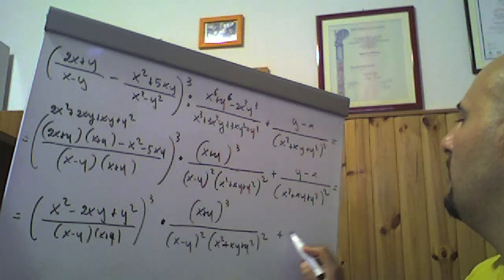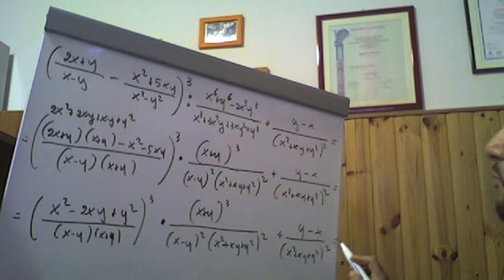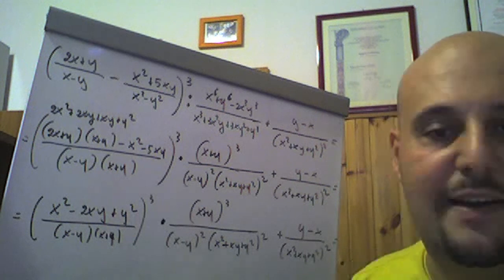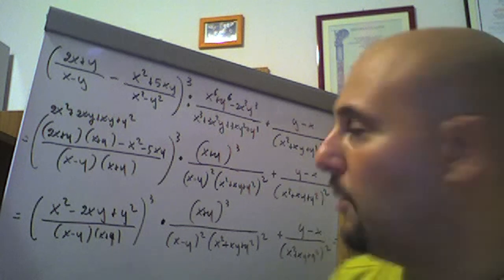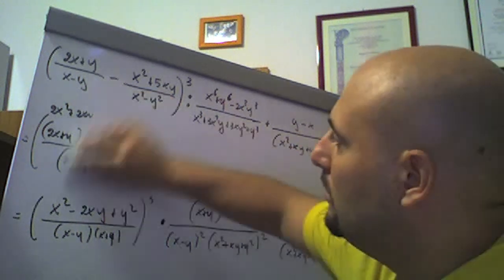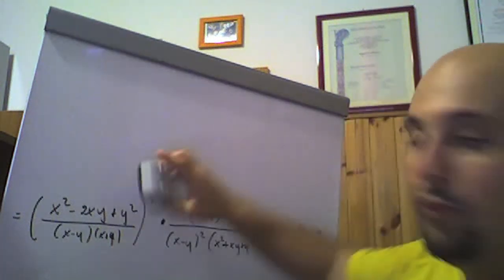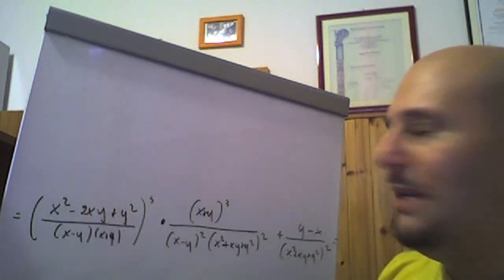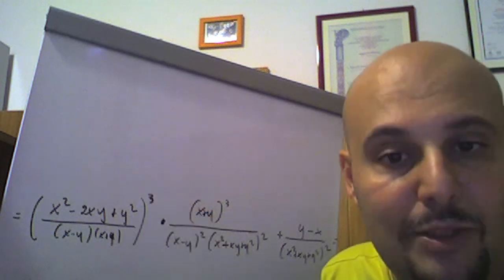Più (y meno x) fratto (x quadro più xy più y quadro) elevato al quadrato, uguale. Allora ricordiamo che una frazione algebrica elevata al cubo vuol dire elevare al cubo il numeratore e il denominatore, che a sua volta vuol dire elevare al cubo i due fattori del prodotto (x meno y) per (x più y). Pertanto, se mi permettete una semplificazione veloce — salto un passaggio — questo qui che è (x meno y) al quadrato, se lo elevo al cubo, devo fare 2 per 3, quindi (x meno y) alla sesta.